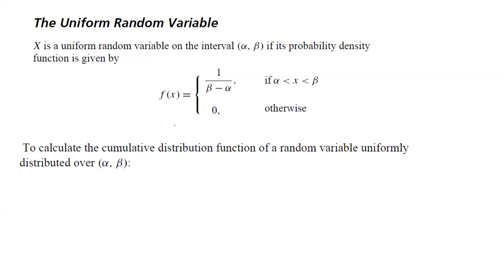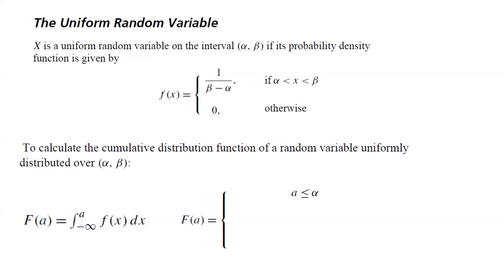Using this information, we can calculate the cumulative distribution function of the uniform random variable over the interval alpha to beta. The CDF F of a equals the integral of f of x dx from negative infinity to a — the area to the left-hand side. If a is less than or equal to alpha, we get 0. If a is between alpha and beta, we get a minus alpha over beta minus alpha. If a is greater than or equal to beta, we get 1.